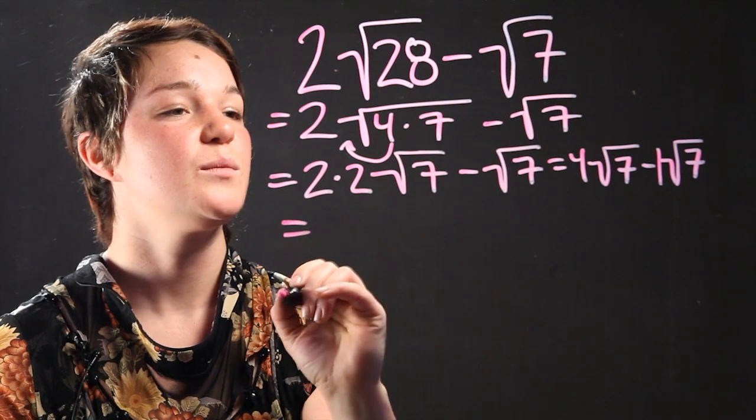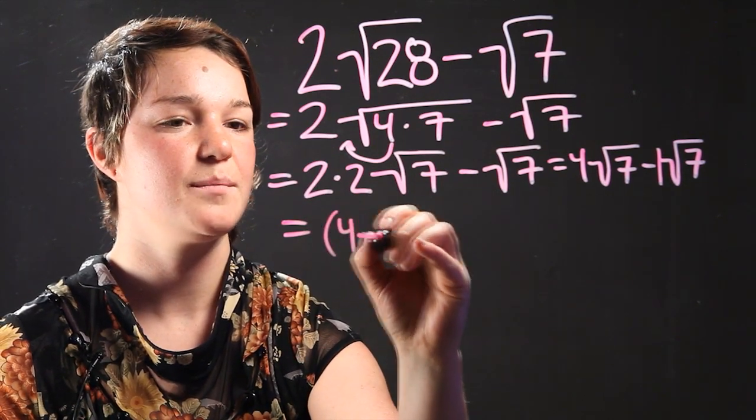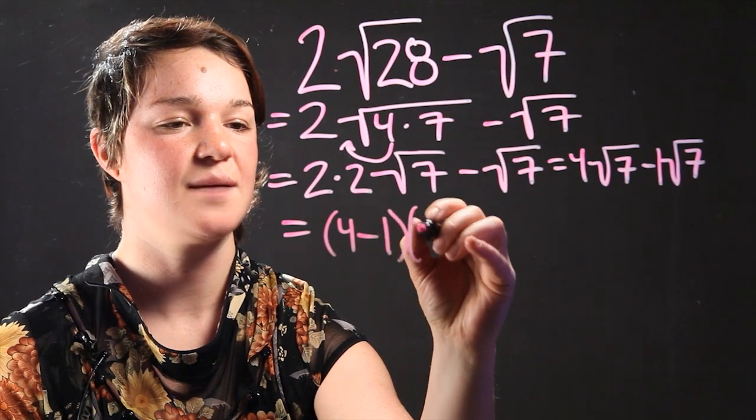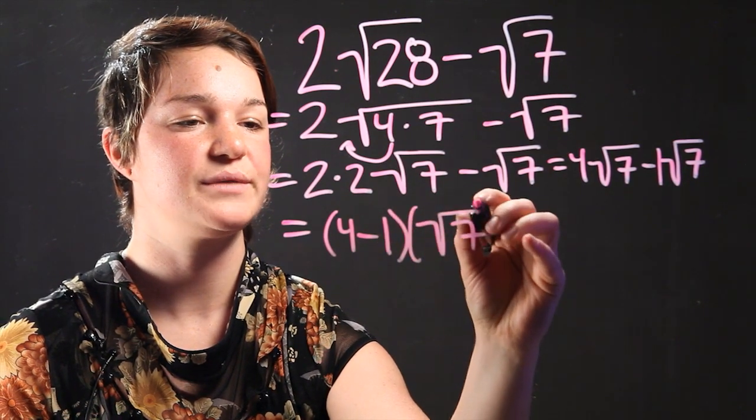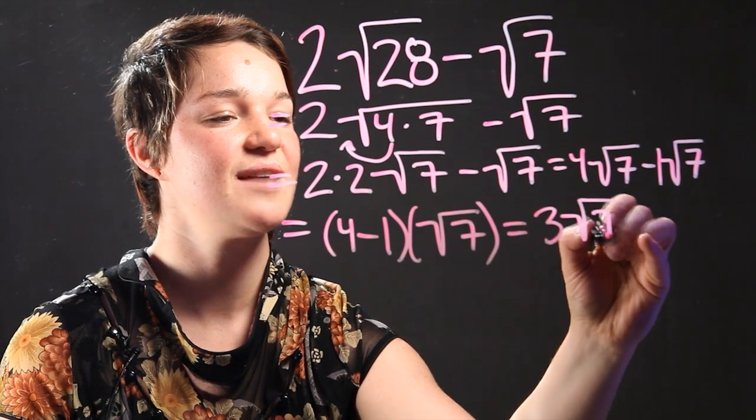So what that becomes is 4 minus 1 times square root of 7, which simplifies to 3 radical 7.